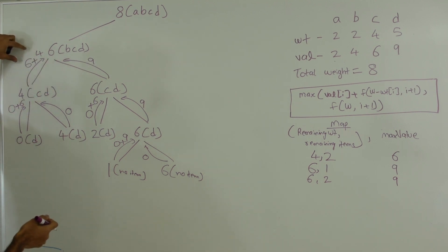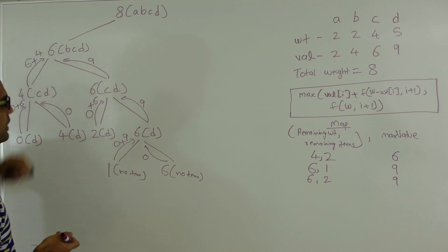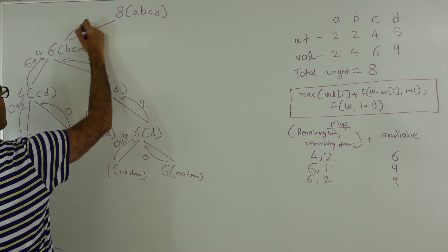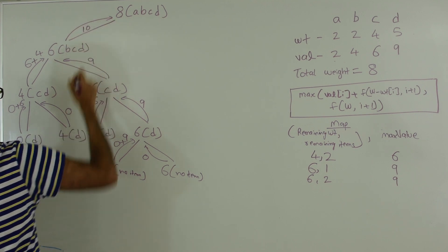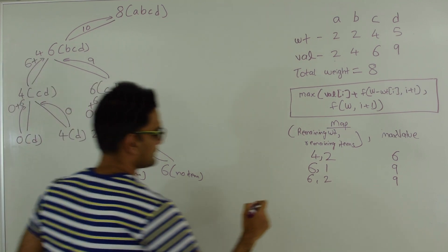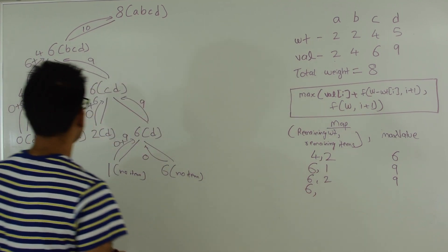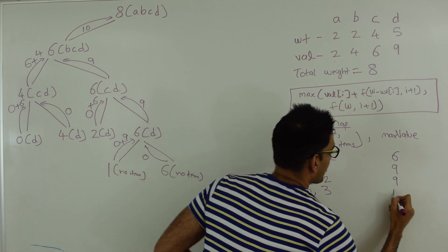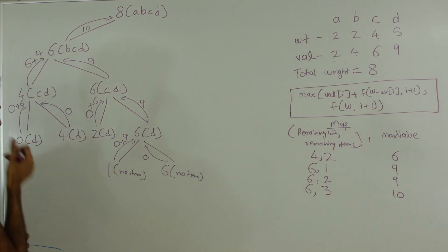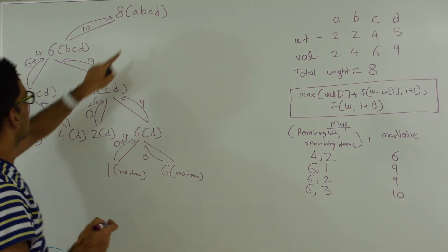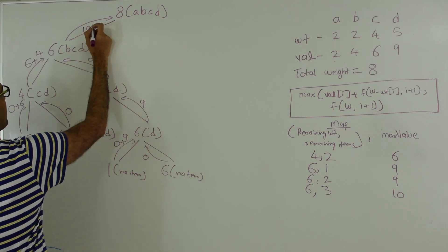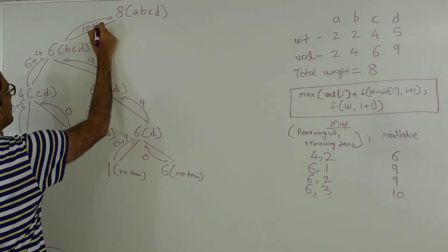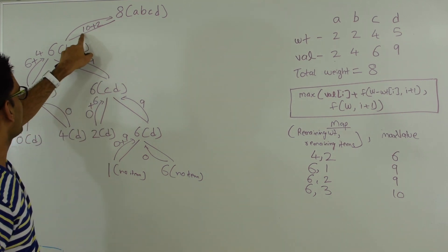So if we picked B we got a total value of 10; if we did not pick B we got 9. Maximum of the two is 10, so we return 10. We update the map: remaining weight 6 with 3 items gives best value 10. Since we picked A, the maximum we can get is 10 plus the value of A which is 2, giving 12 if we picked A.